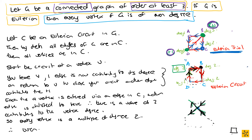So we've shown: if G is Eulerian, then every vertex of G is of even degree. One useful consequence is the contrapositive — not B implies not A. So if there exists a vertex of odd degree, an Eulerian graph won't exist. This means you can actually determine that a graph is not Eulerian by using this theorem — just check for odd-degree vertices.